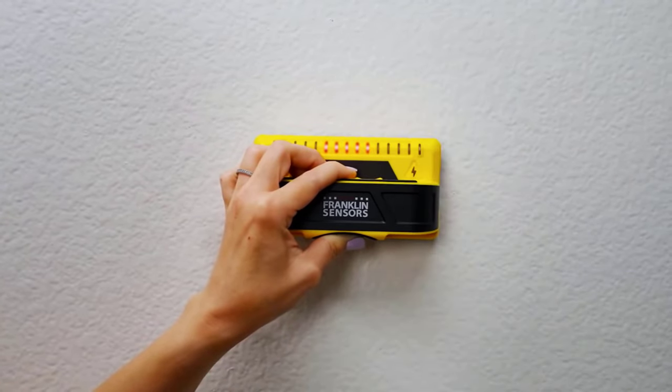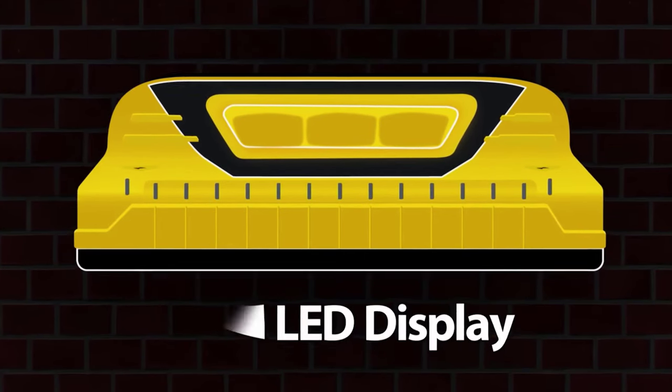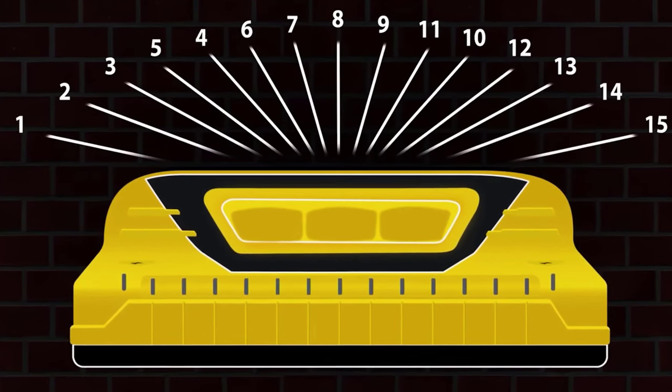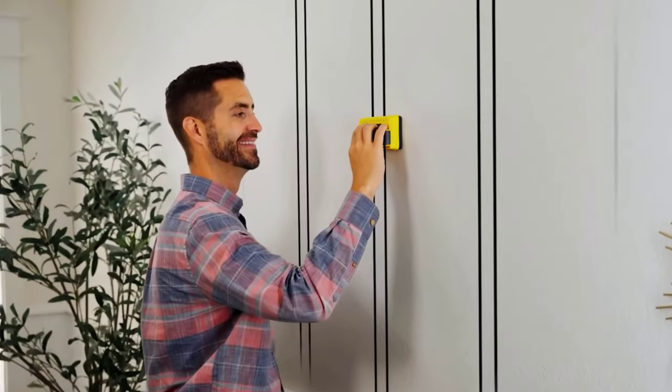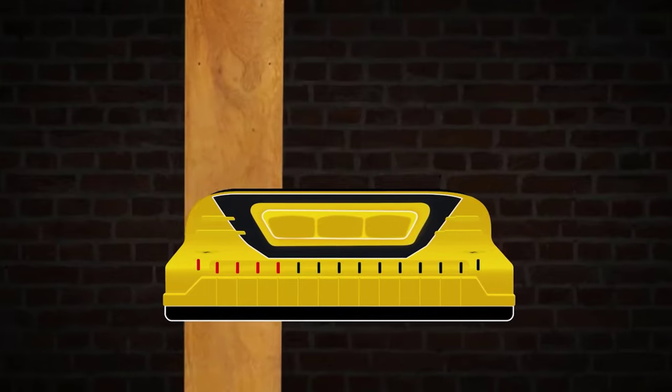The stud finder is powered by two AAA batteries. Thanks to the nine built-in sensors, the maximum depth of detection is 1.5 inches. In addition, the manufacturer replaced the screen with a system of 15 LEDs, thus the information is displayed more clearly and accurately.